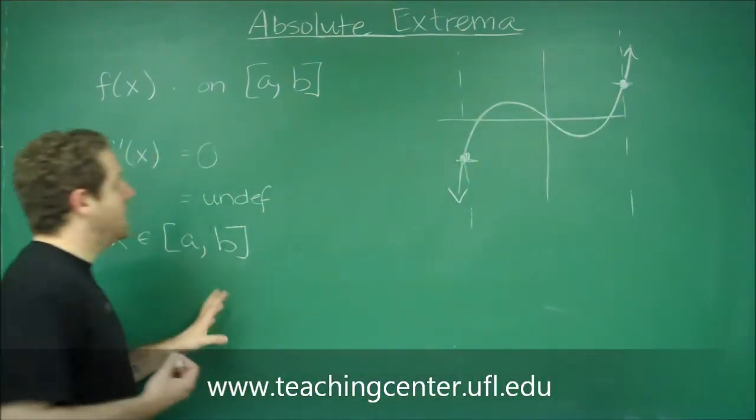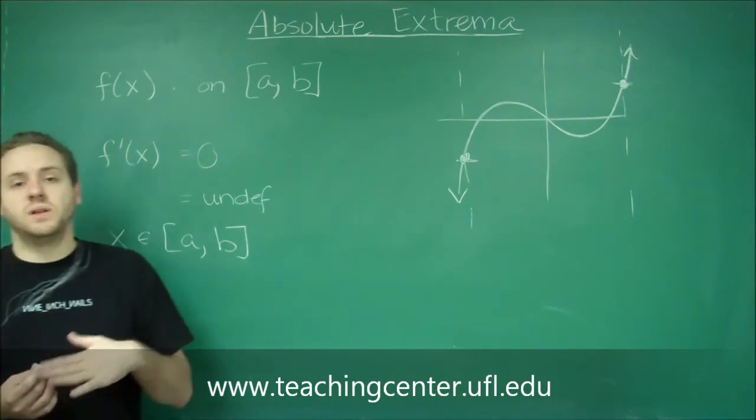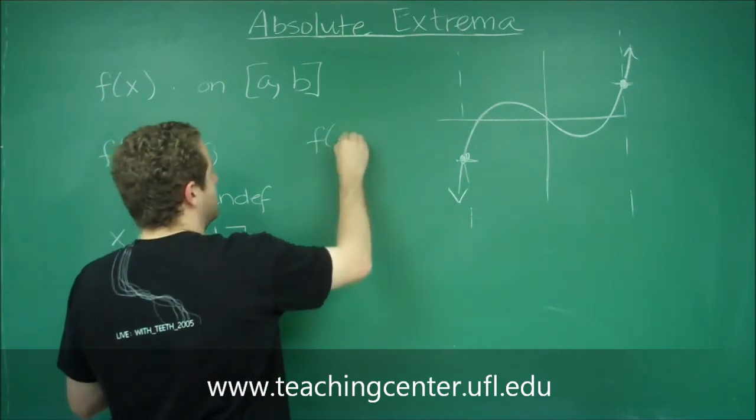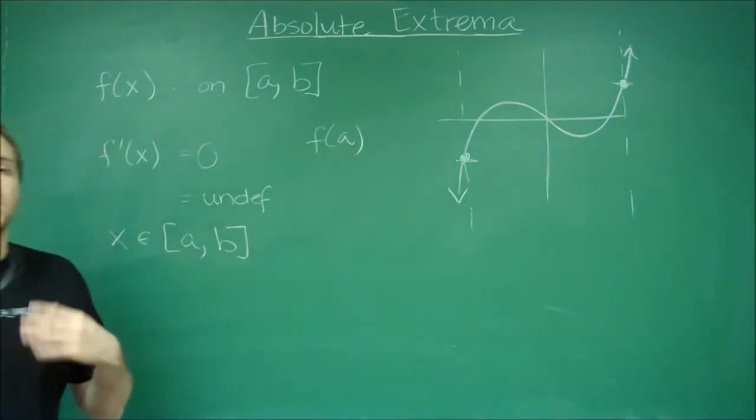So for this, when you're doing the absolute extrema, you don't have to do a number line. You can just try the points themselves. So we've got to try the left endpoint, which we called a. So we do f of a, we see what that is.